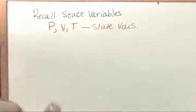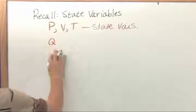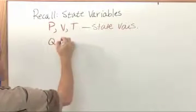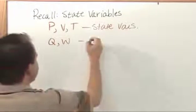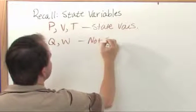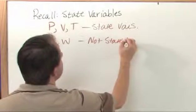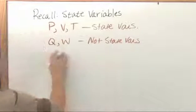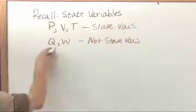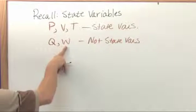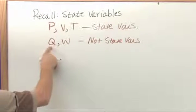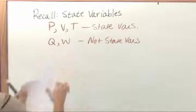In contrast to that, things like the heat going in to the system and the work done by the system or the work the system does in the surroundings, those are not state variables. It's very important to know how much heat goes in or out of something. It's very important to know how much work is done. But neither one of these things represents the intrinsic state of the gas there.